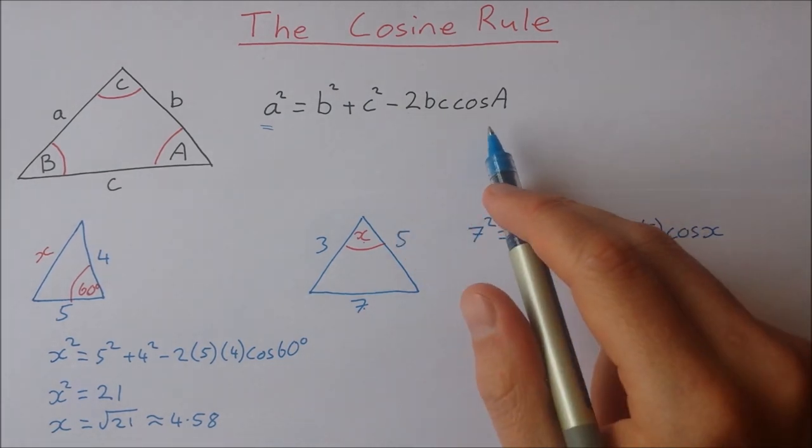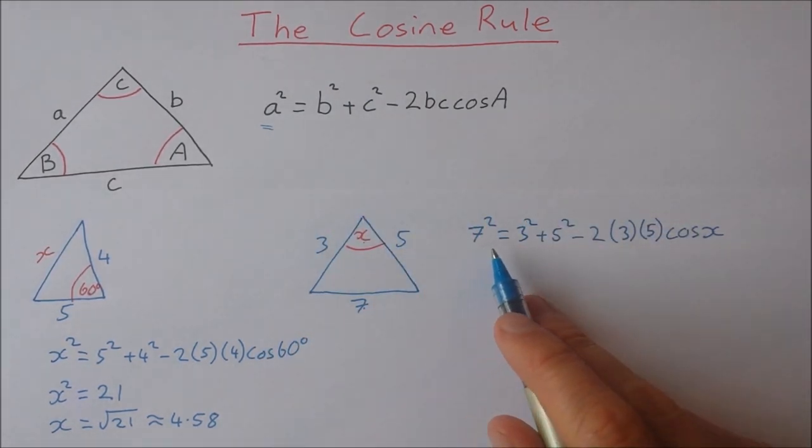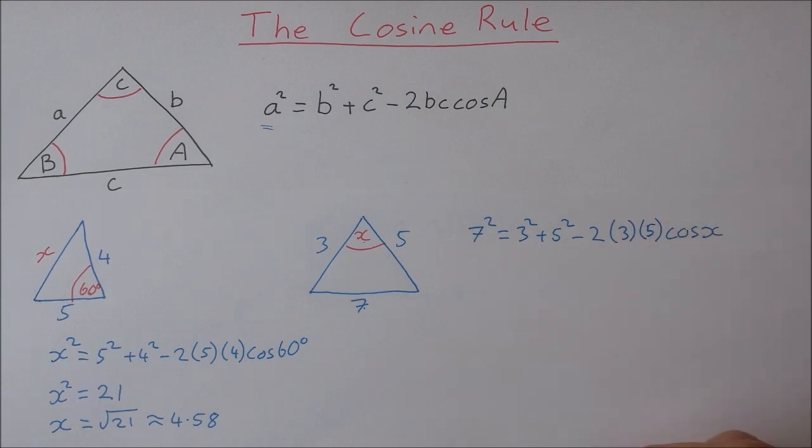You don't really need to know that because if you know just this one then you can manipulate it to get it into the form of the other one. So basically we want to isolate this cosine of x so then we can find what x is.